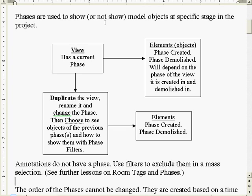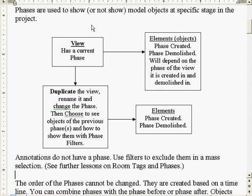Phases are generally used to show or not show model objects at a specific stage in the project. Think of phases as having a timeline involved. When we go into our dialogue box, you can create phases, and phases are created with the factor of time being involved. You cannot take phase three, which was the end of the project, and turn it into phase one, because your objects won't know what to do.